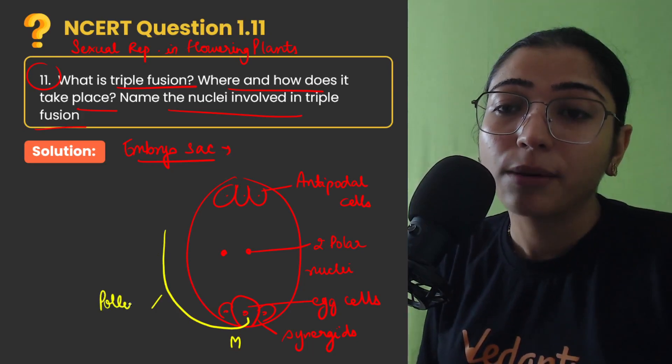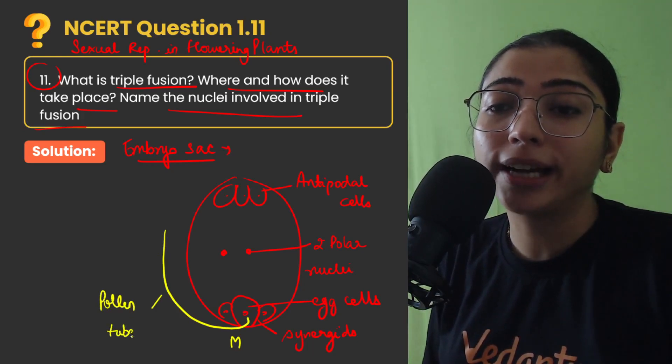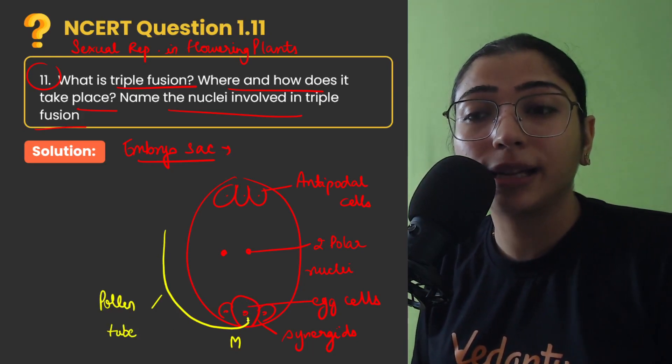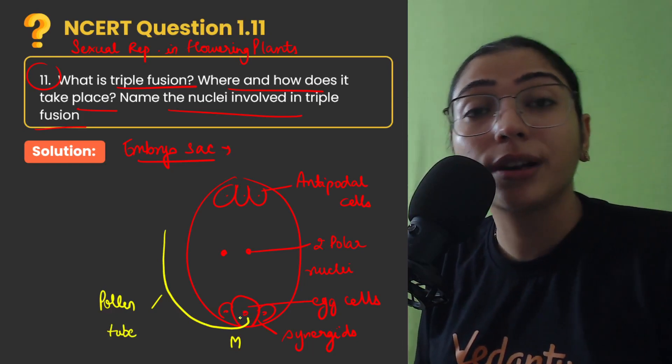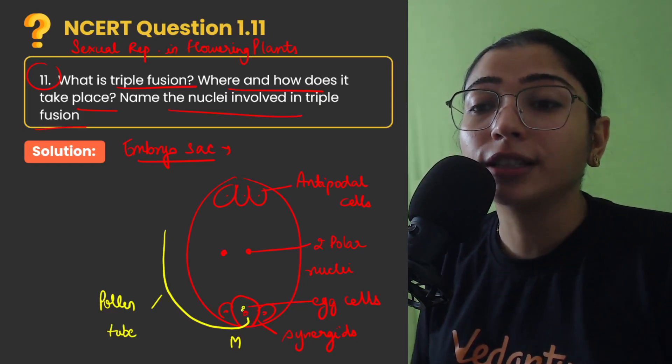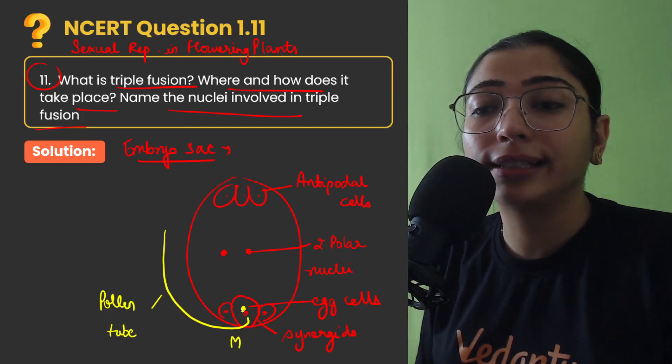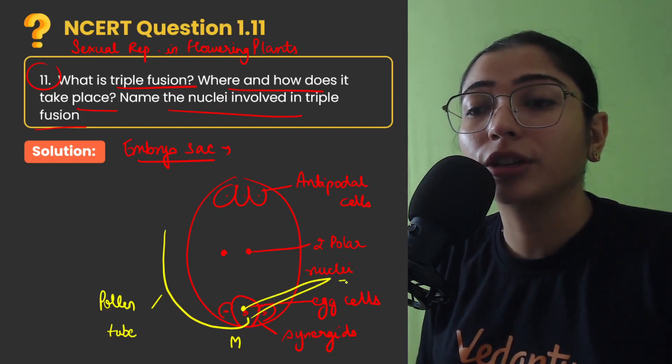Now when the pollen tube enters, this is the pollen tube, it will be directed towards the egg cell. It will go first and it will release the first gamete. First gamete here fuse with the egg cell and it will result into a structure called zygote.